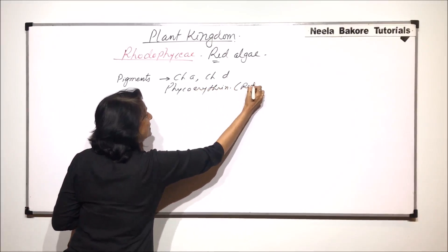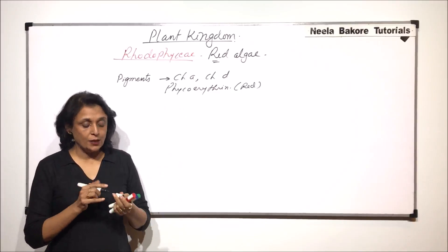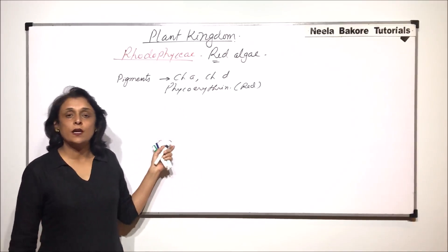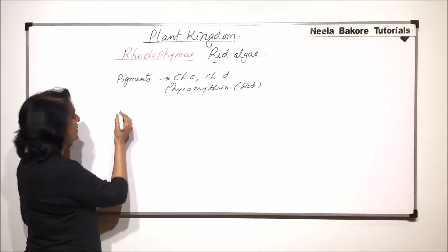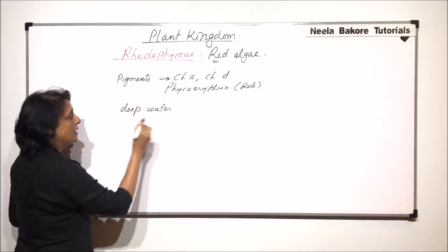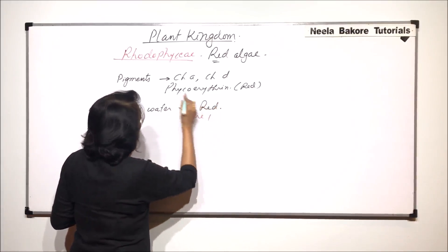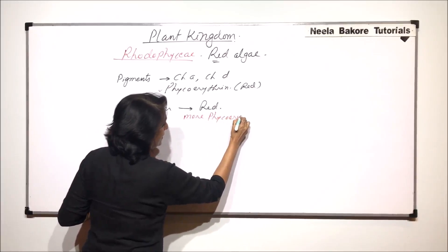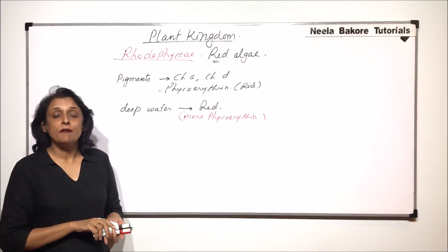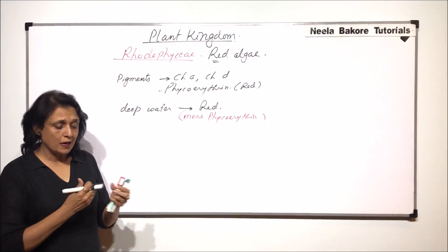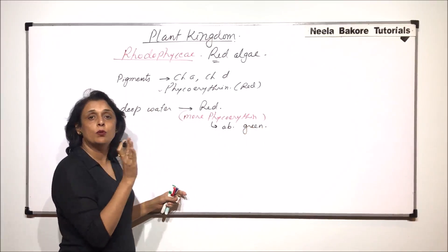And this Phycoerythrin is the red pigment. Now, it is not always that the red alga is red. The color of the alga changes depending upon its location in water. It is an aquatic alga and is normally found in all oceans. When we talk of the color, if the red algae is found in deep water, then the color is red. That means it has more of phycoerythrin. This pigment is more and due to which the alga appears red. Now, what is the reason of this? We know that there are pigments which have the capacity to absorb a particular wavelength. So this red pigment that is Phycoerythrin, it absorbs the green wavelength, normally the blue-green wavelength.